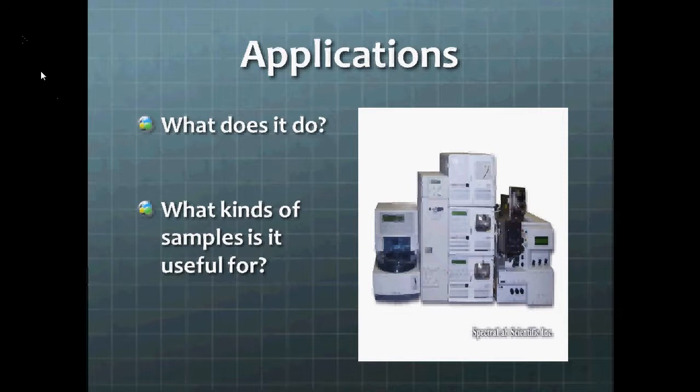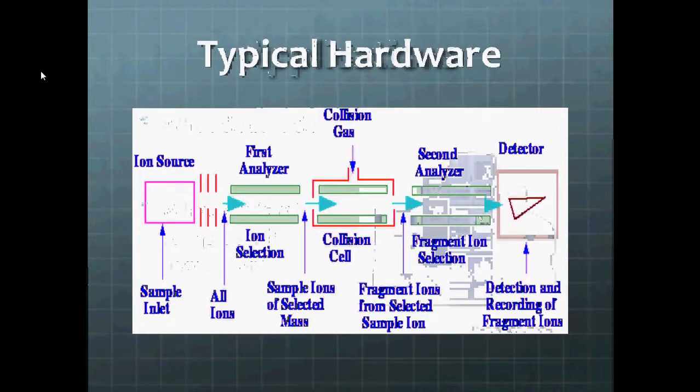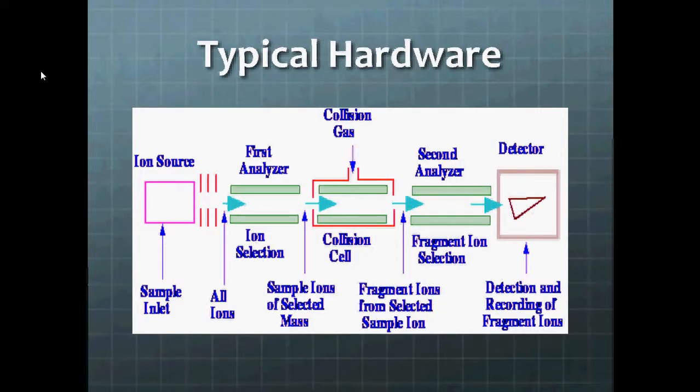Here's the typical hardware layout for a triple quadrupole. First, your sample enters through the sample inlet. This can either be done through a direct injection or coming out of a separation method, and it'll enter the ion source, which is usually electron impact but can be a lot of other things. These ions leave the ion source and are accelerated through the first quadrupole, which filters them according to their mass charge ratio.